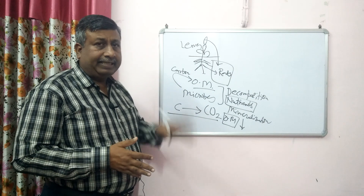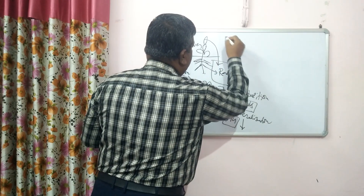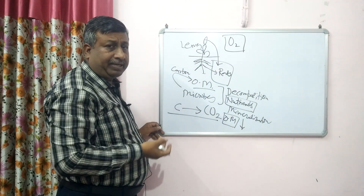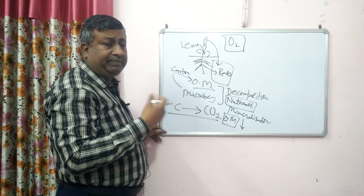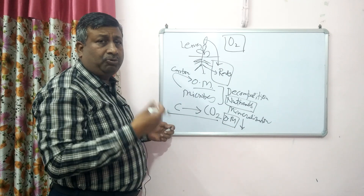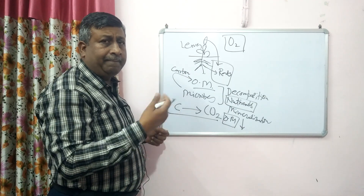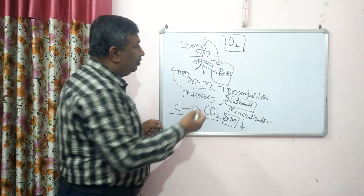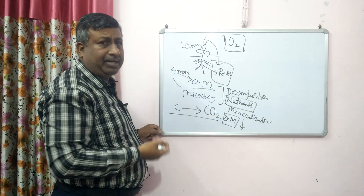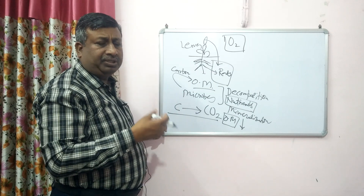Organic matter content decreases because microbes require oxygen for their activity. If oxygen is available, proper temperature is available, and moisture is available, then their activity increases and decomposition is faster. Most microbes require oxygen; these are aerobic microbes. There are some microbes which do not require oxygen — they work under poor oxygen availability and are known as anaerobic microbes.